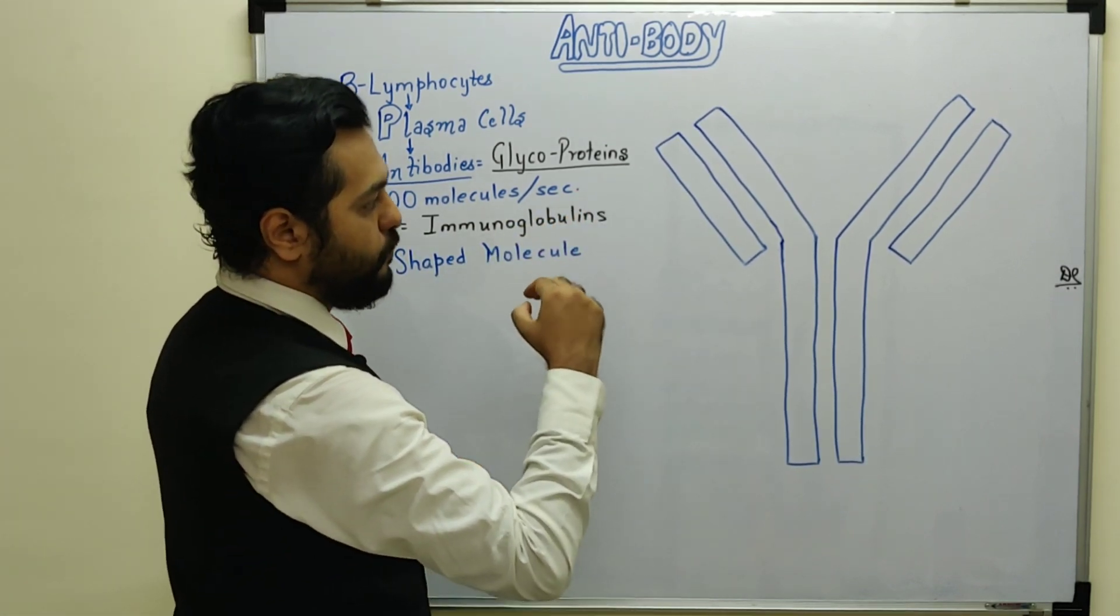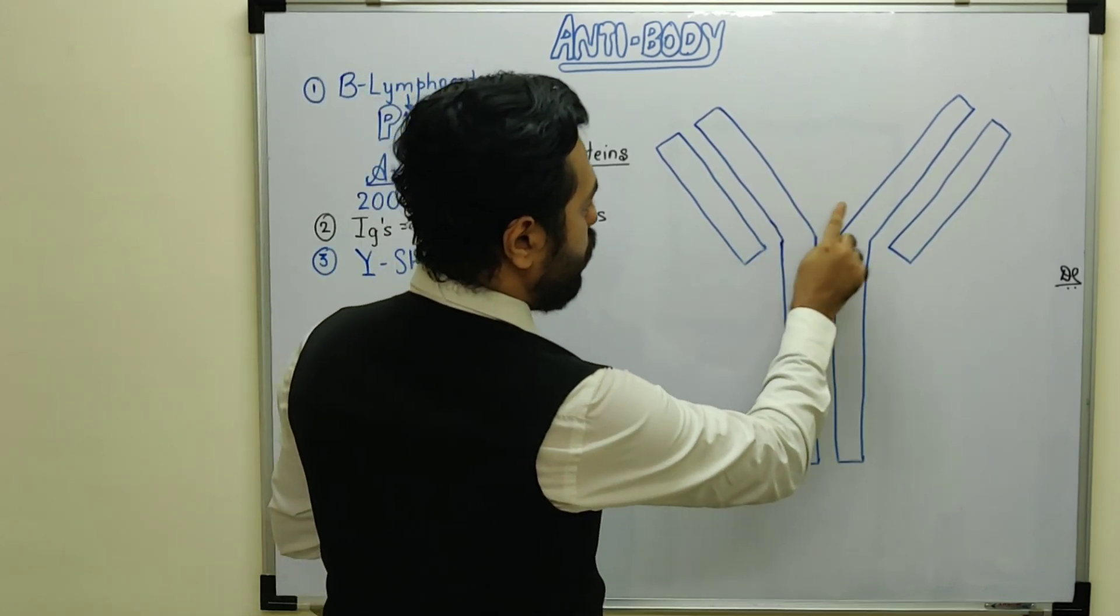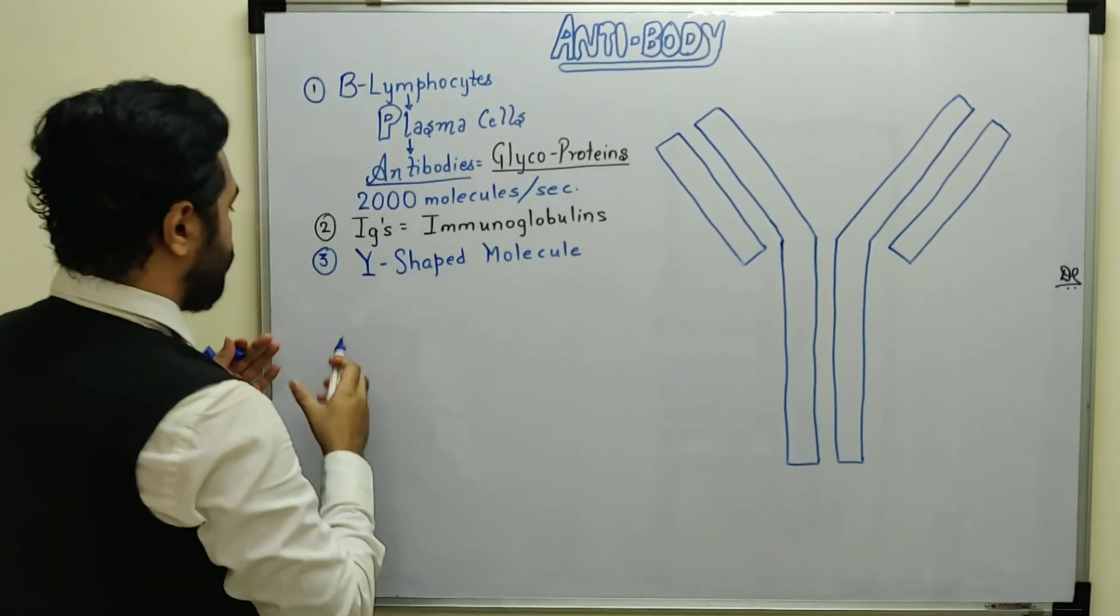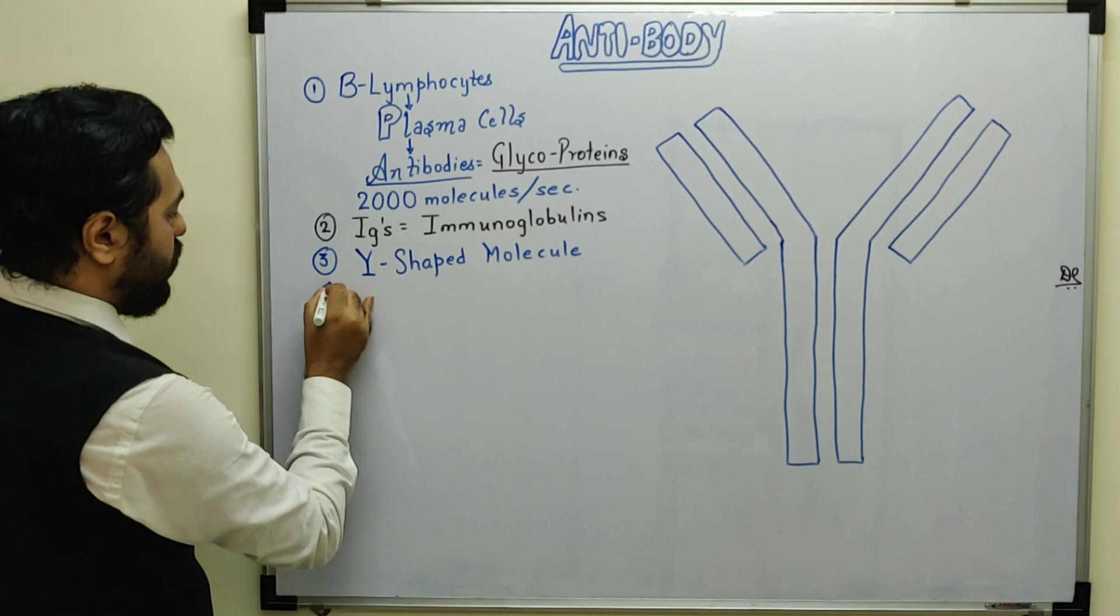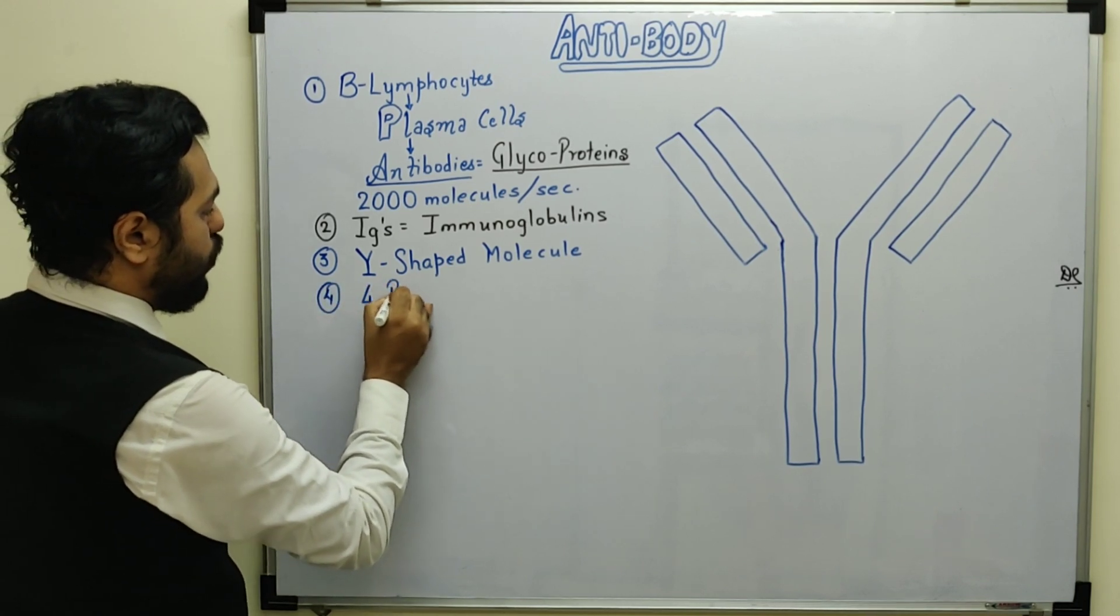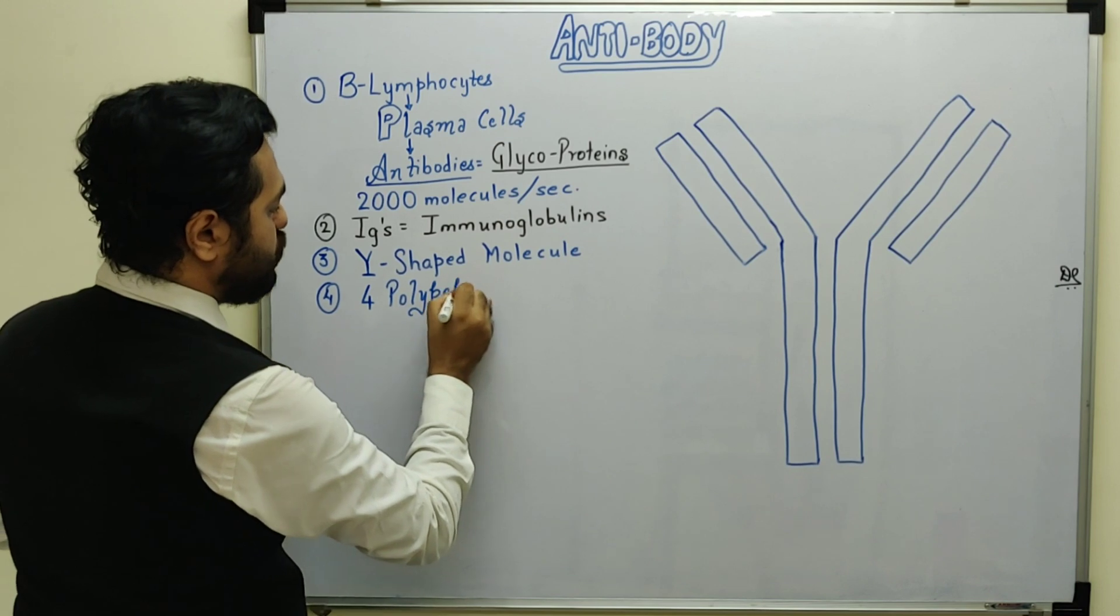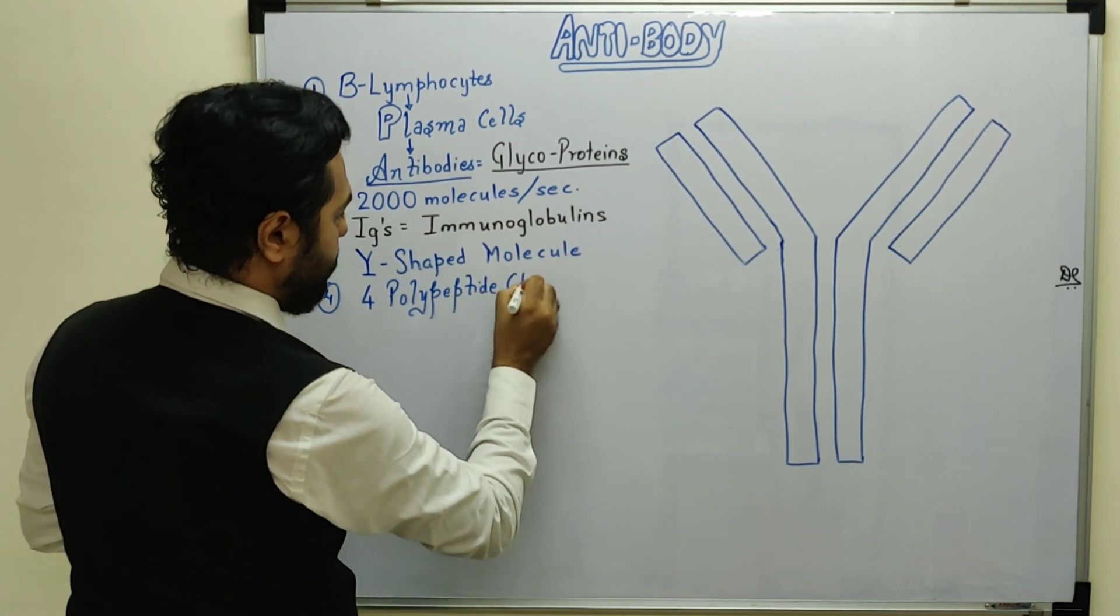How many polypeptide chains does it have? One, two, three, four. So as you can observe, this Y-shaped molecule consists of four polypeptide chains.